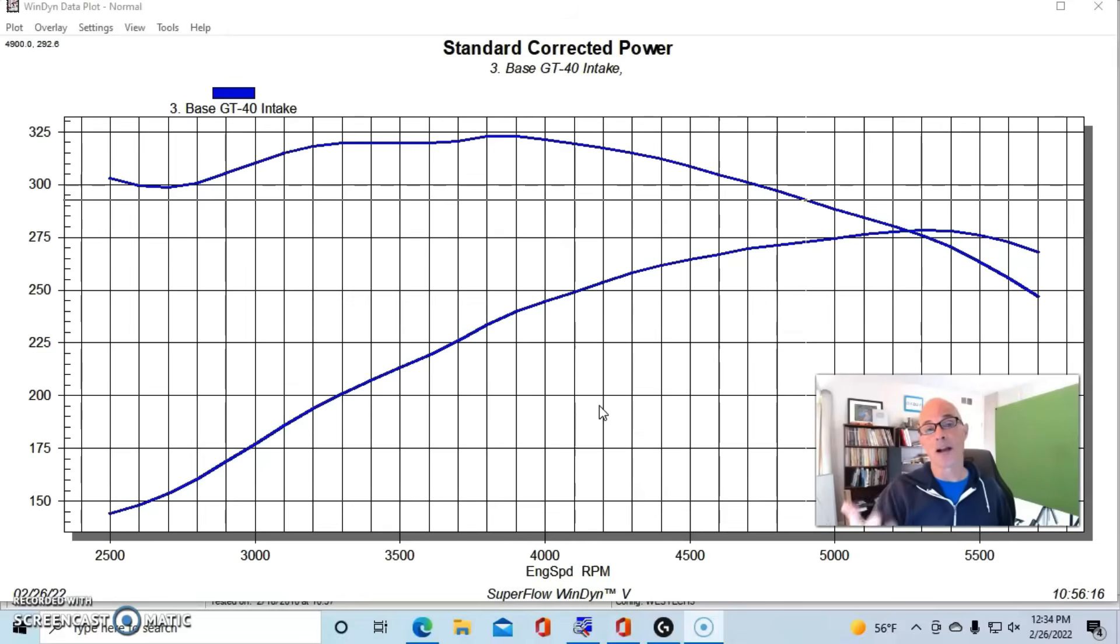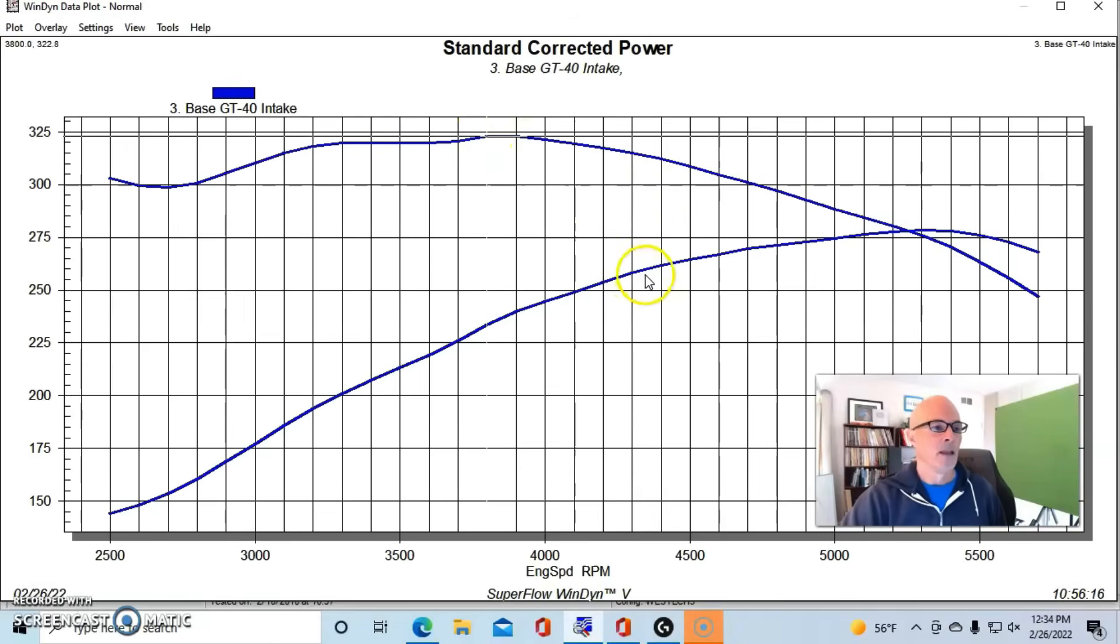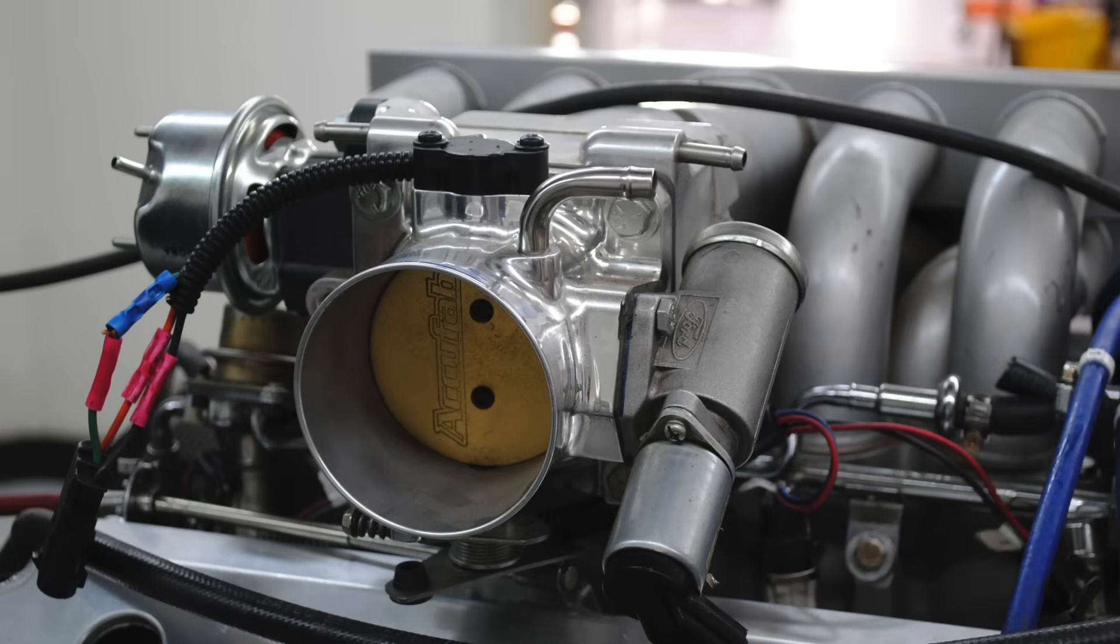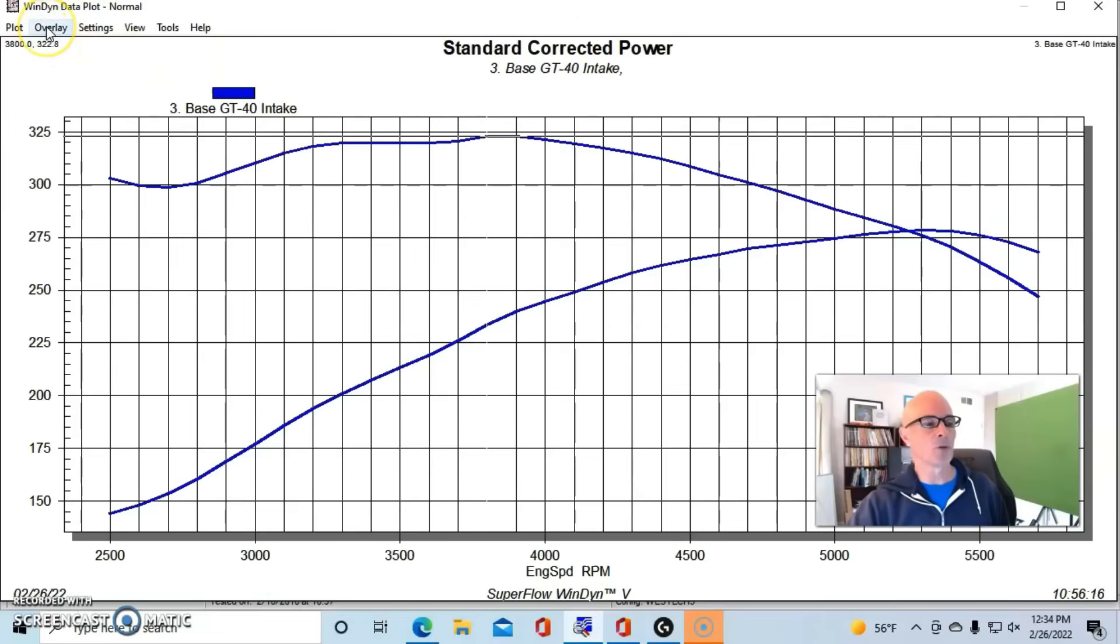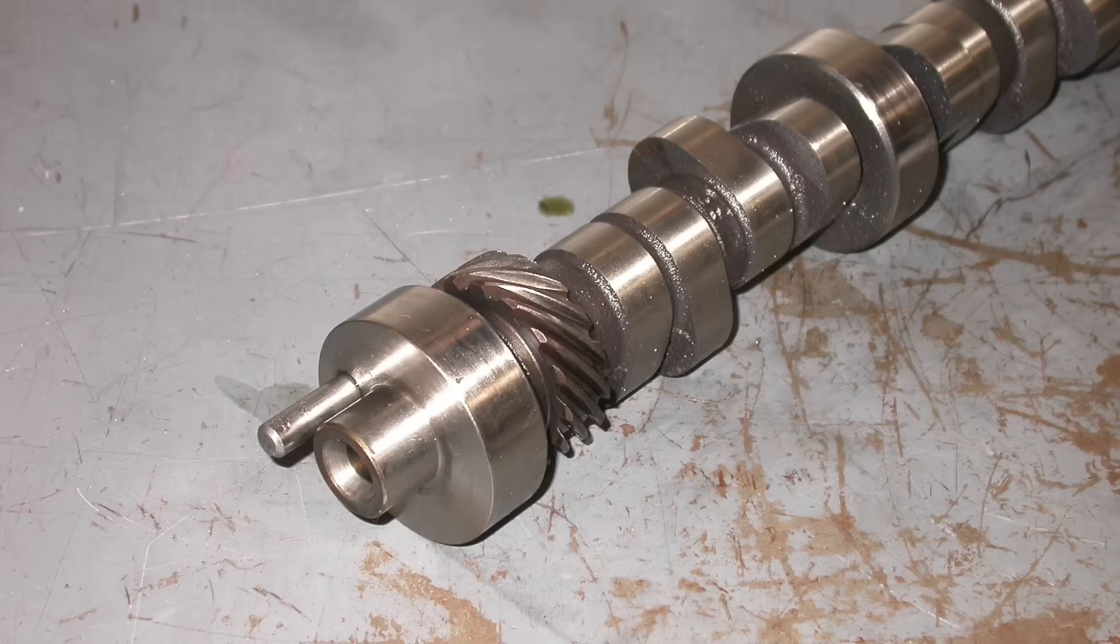And then we ran it with the stock 5.0L camshaft, optimized the power and timing and all that stuff. With the stock HO camshaft, this combination produced 279 horsepower at 5,400 RPM and then made 323 foot-pounds of torque. We had a 70 millimeter AccuFab throttle body on this.